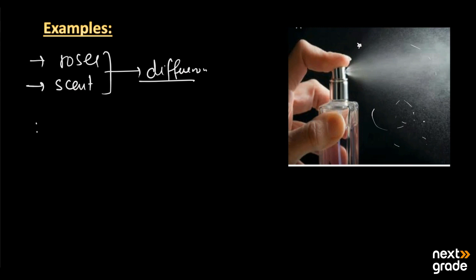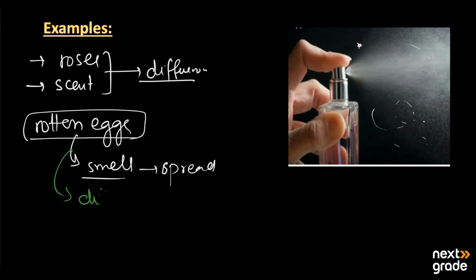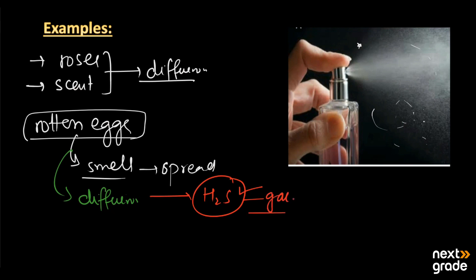Another example: if we have rotten eggs in a room, we can feel that the smell spreads throughout the whole room. This spreading is due to diffusion, because rotten eggs produce the gas hydrogen sulfide (H₂S), which is responsible for the smell. This gas spreads all around the room, and this process is called diffusion.